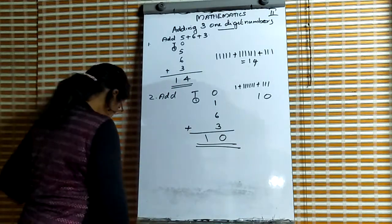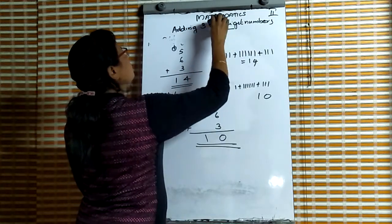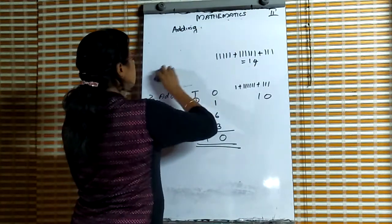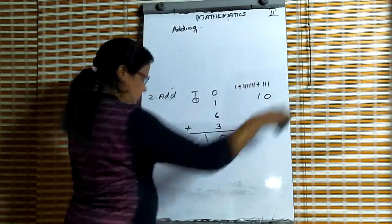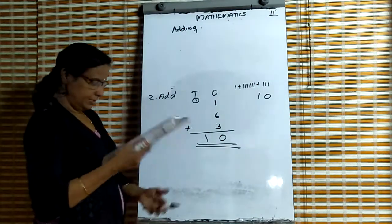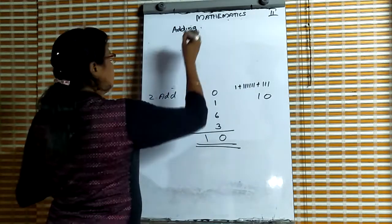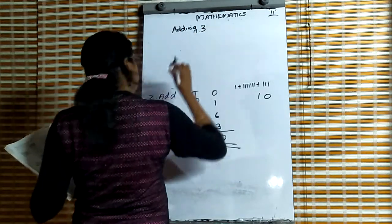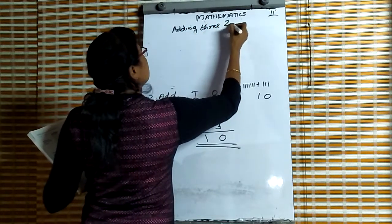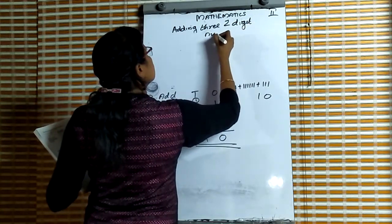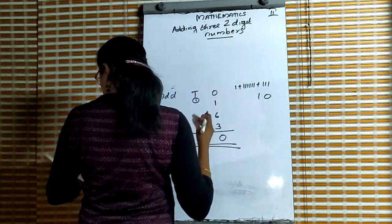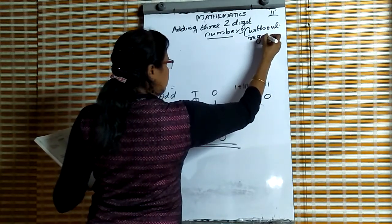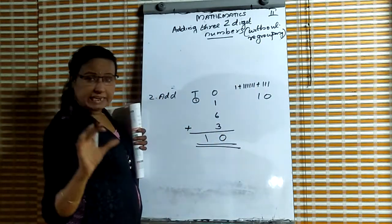Write this in your notebook. Write all this in your notebook. Next heading: Adding three two-digit numbers. Question 1, without regrouping. Without regrouping means without carrying.